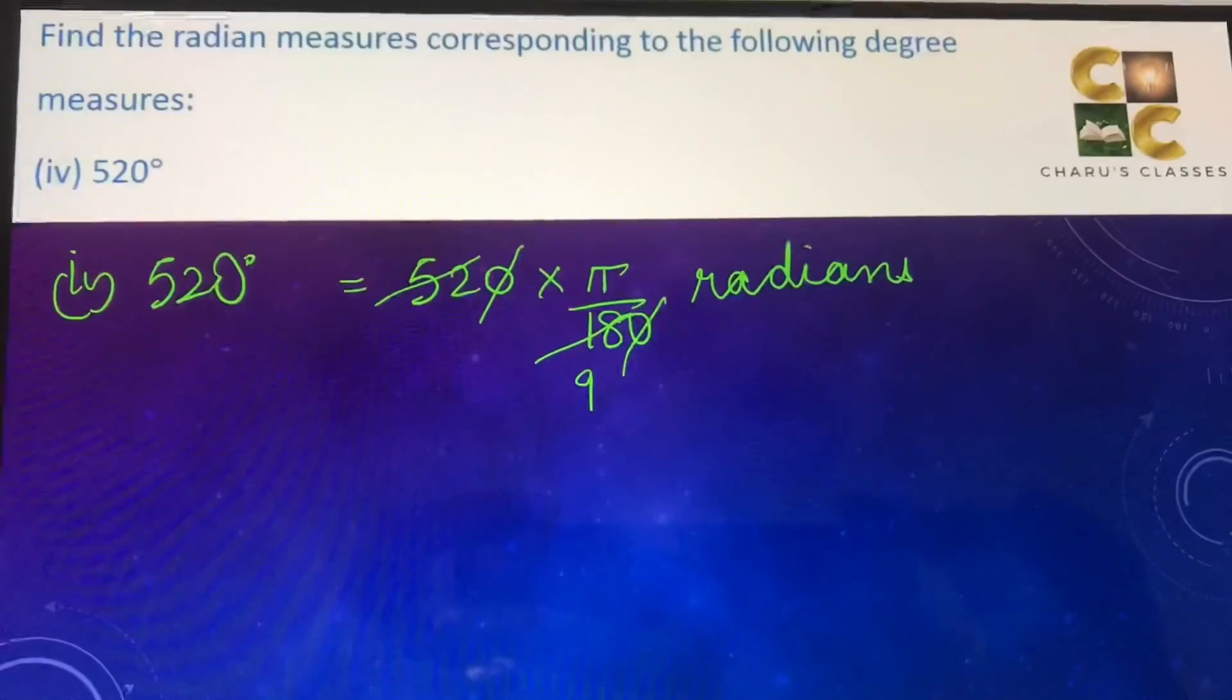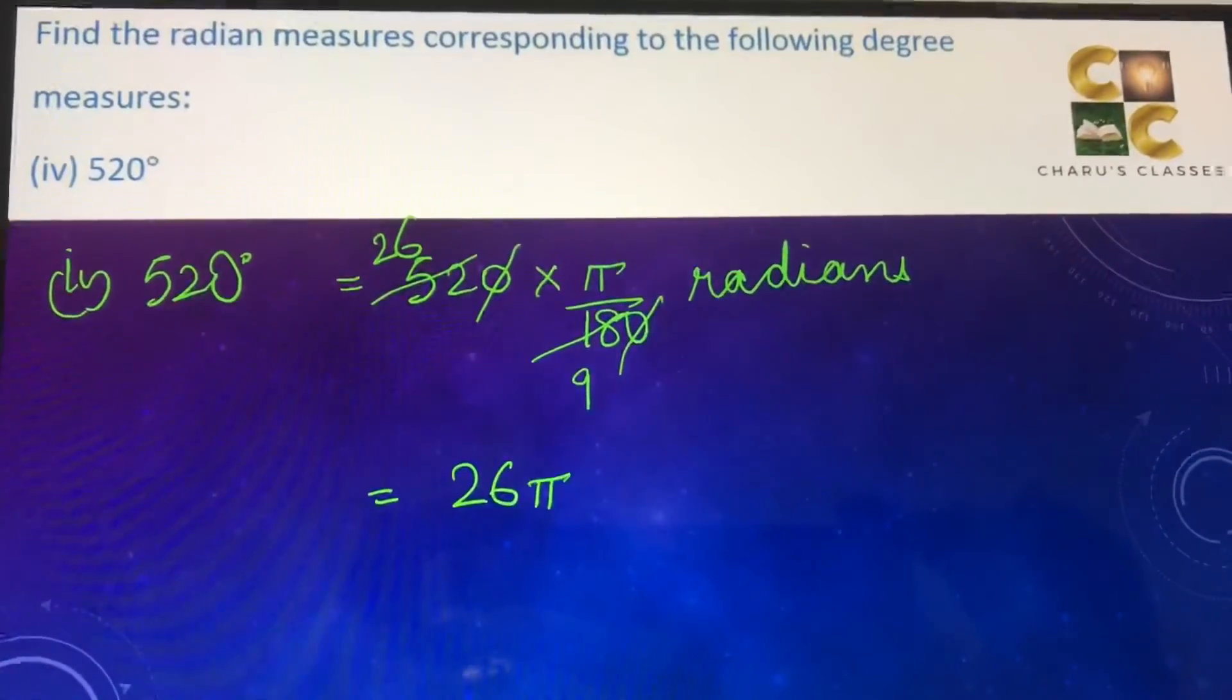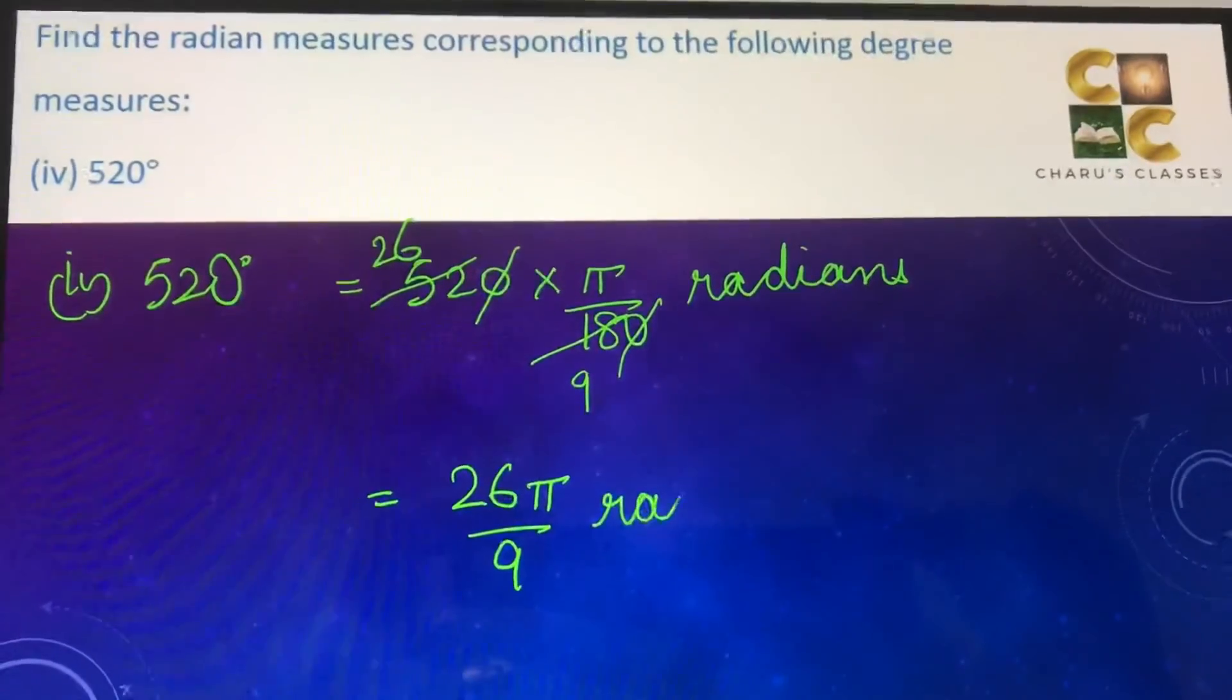Finally, we have 26π by 9 radians as the answer.